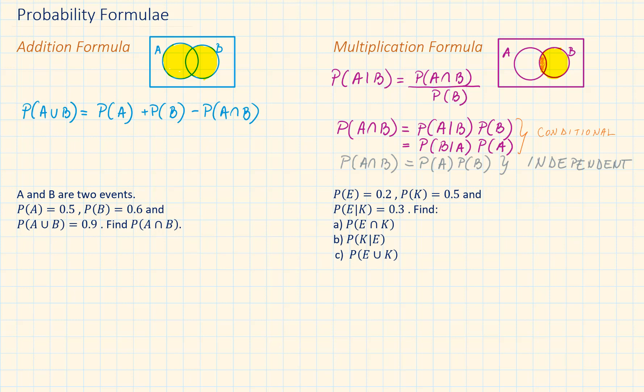Let's look at how we can apply the addition formulae. A and B are two events. Probability of A is equal to 0.5, probability of B is equal to 0.6, and their union is 0.9. The question doesn't specify whether A and B are independent or not. So to work out their intersection, we have to use the addition formulae, which is probability of A plus probability of B minus their overlap. We don't know the overlap, but we know everything else.